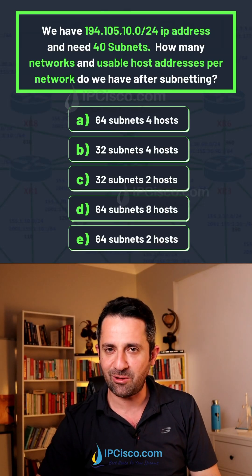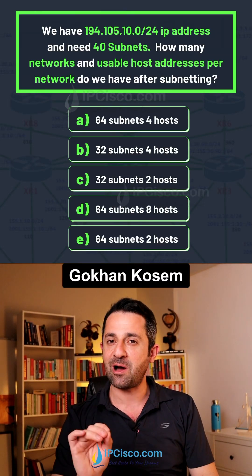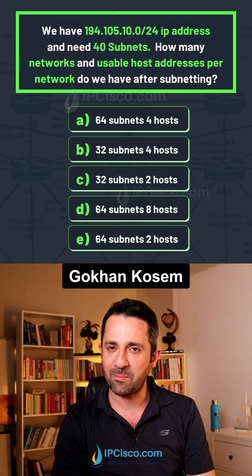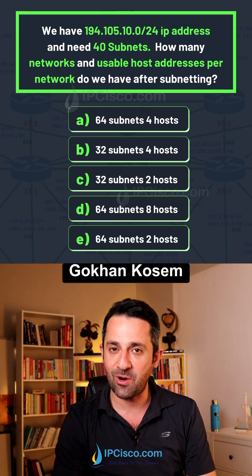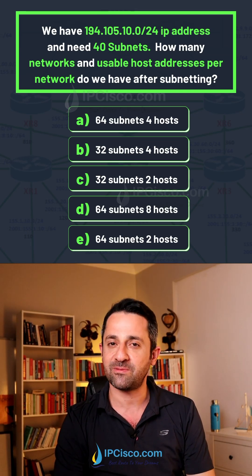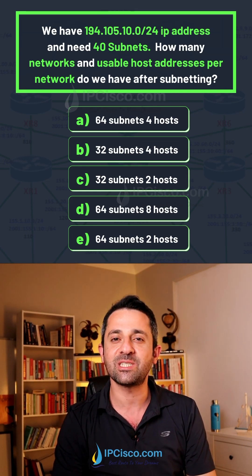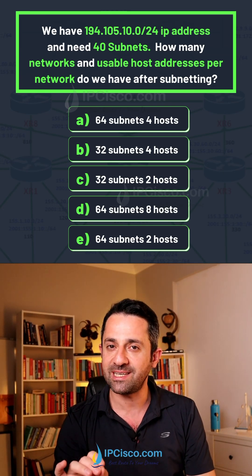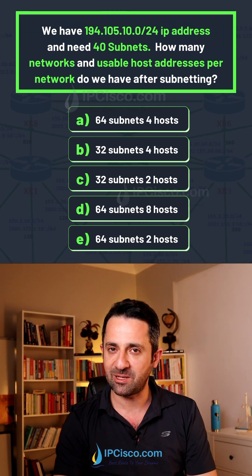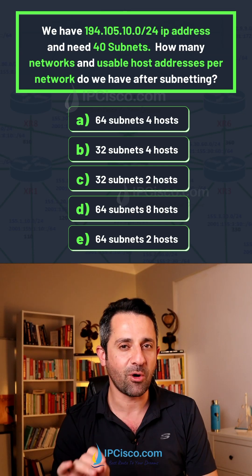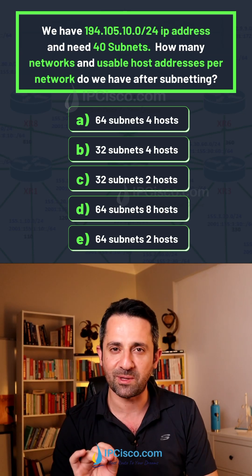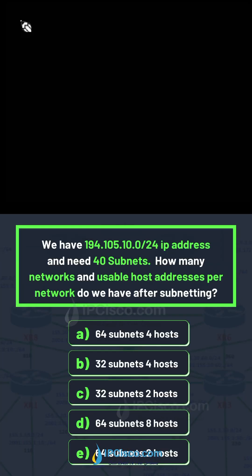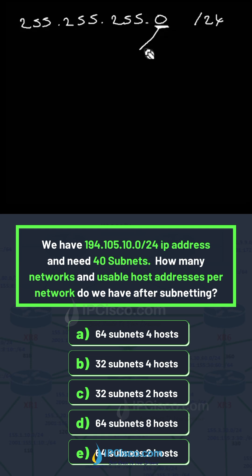How many networks and usable host addresses after subnetting? Your IP is 194.105.10.0/24 and you need at least 40 subnets. To solve this subnetting question, we will focus on borrowed bits from the host bits. We are writing our subnet mask here — it is /24 — and I will write the last octet in binary format.